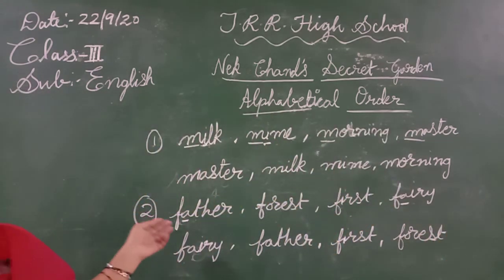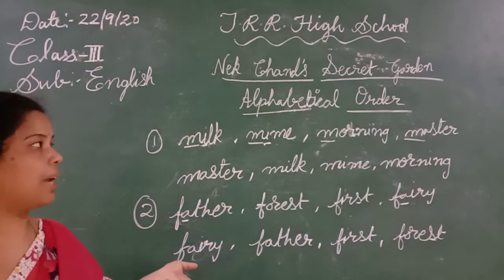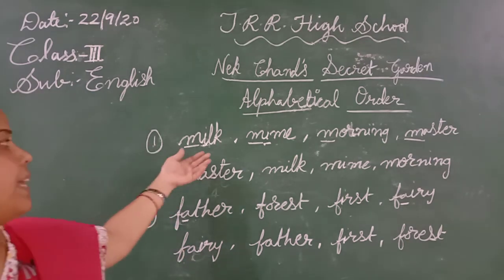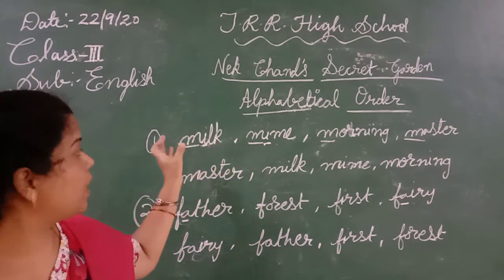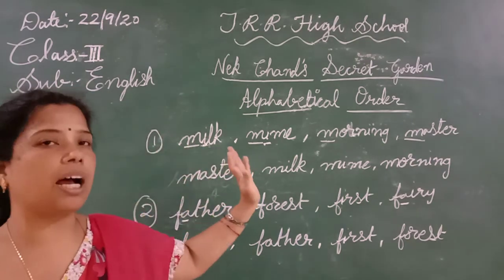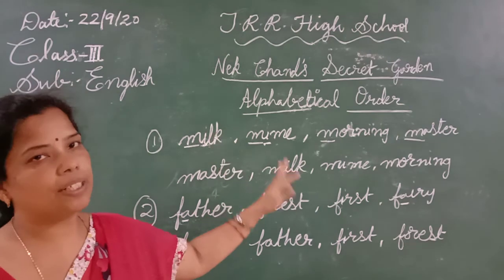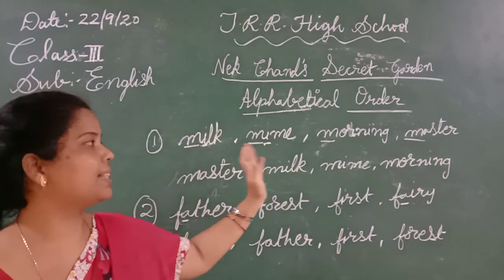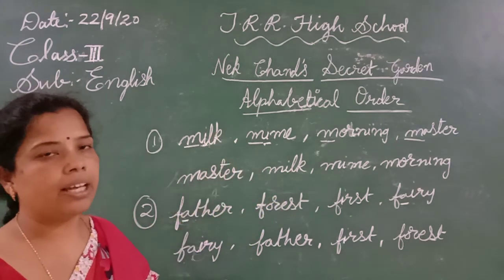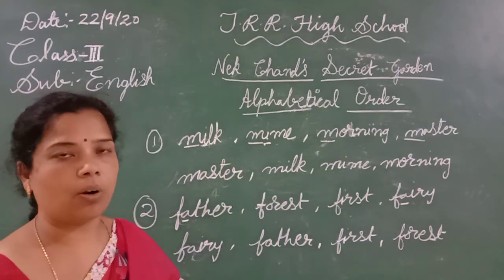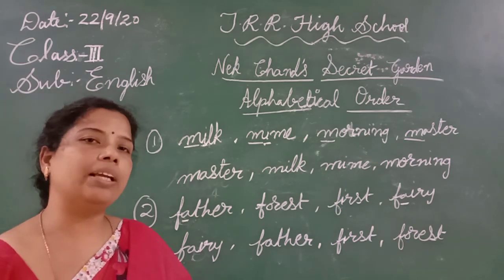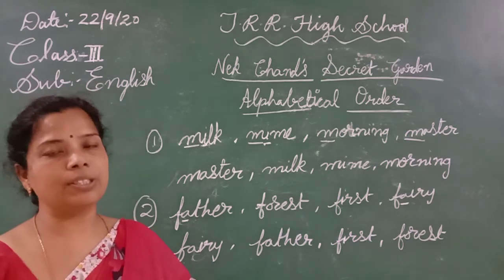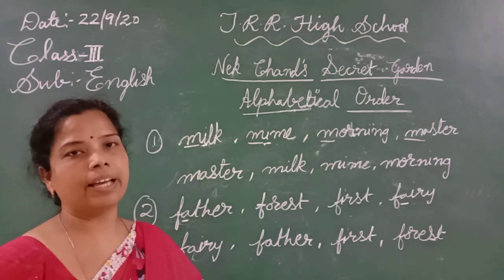So this is how we write the alphabetical order. When all the words start with the same first letter, we have to look at the second letter and write the alphabetical order. We will discuss more in the Zoom class. Thank you.